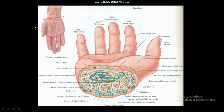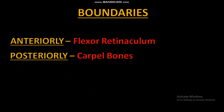If we take a cross section of the wrist and view it, we find a hollow space at the anterior side of the wrist. This space is known as the Carpal Tunnel. Now talking about the boundaries of the Carpal Tunnel: the anterior boundary is formed by the flexor retinaculum, and the posterior boundary is formed by the carpal bones.